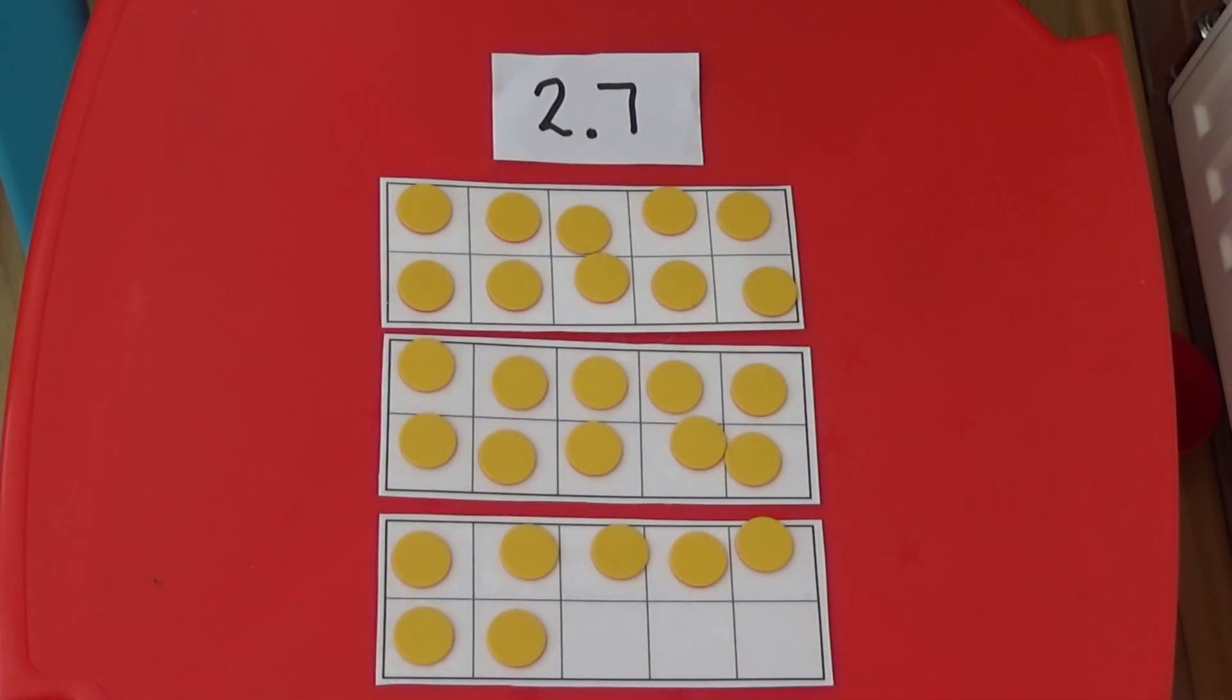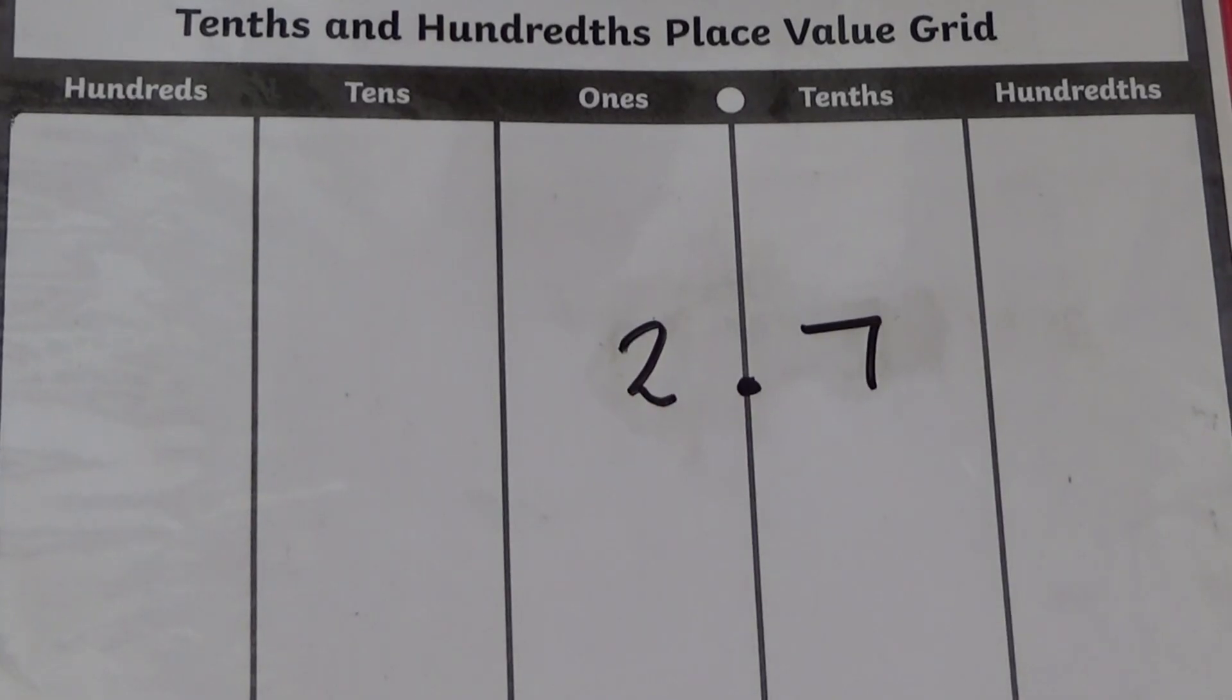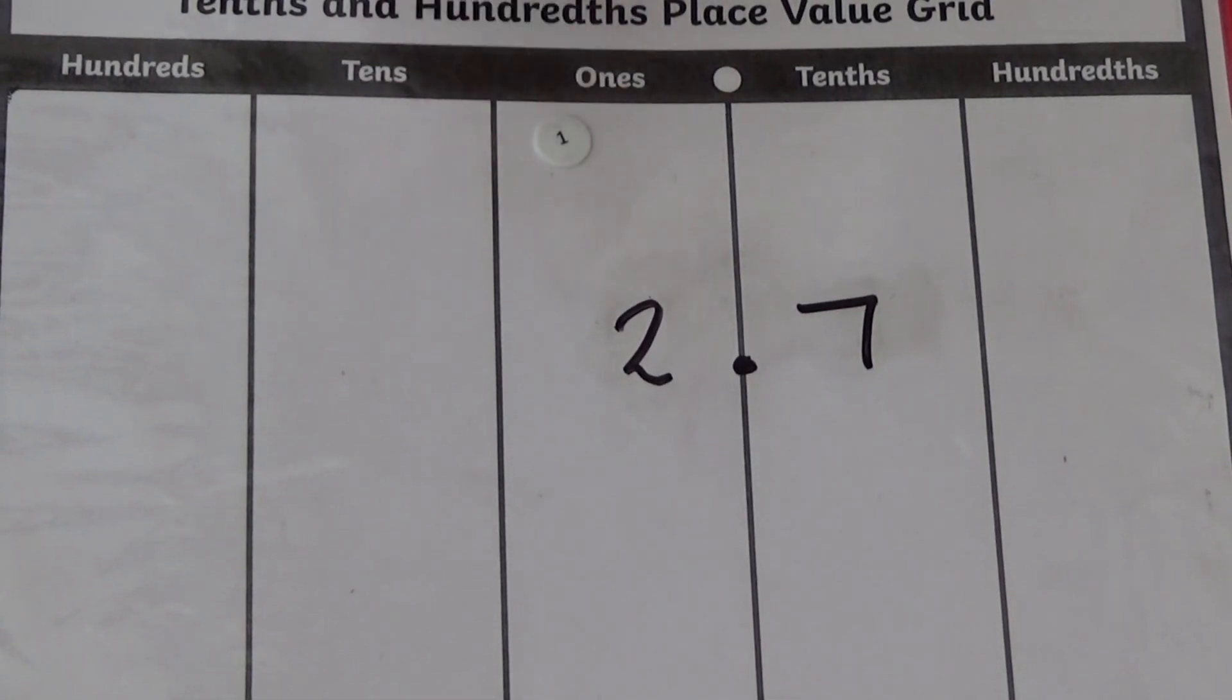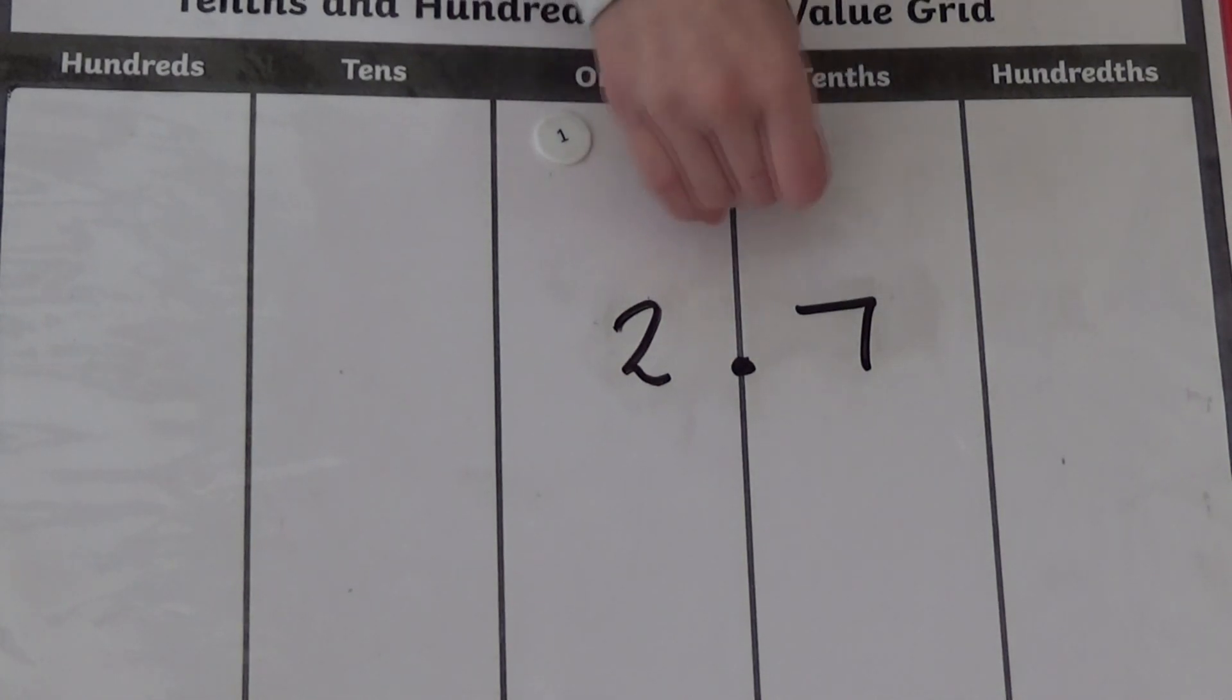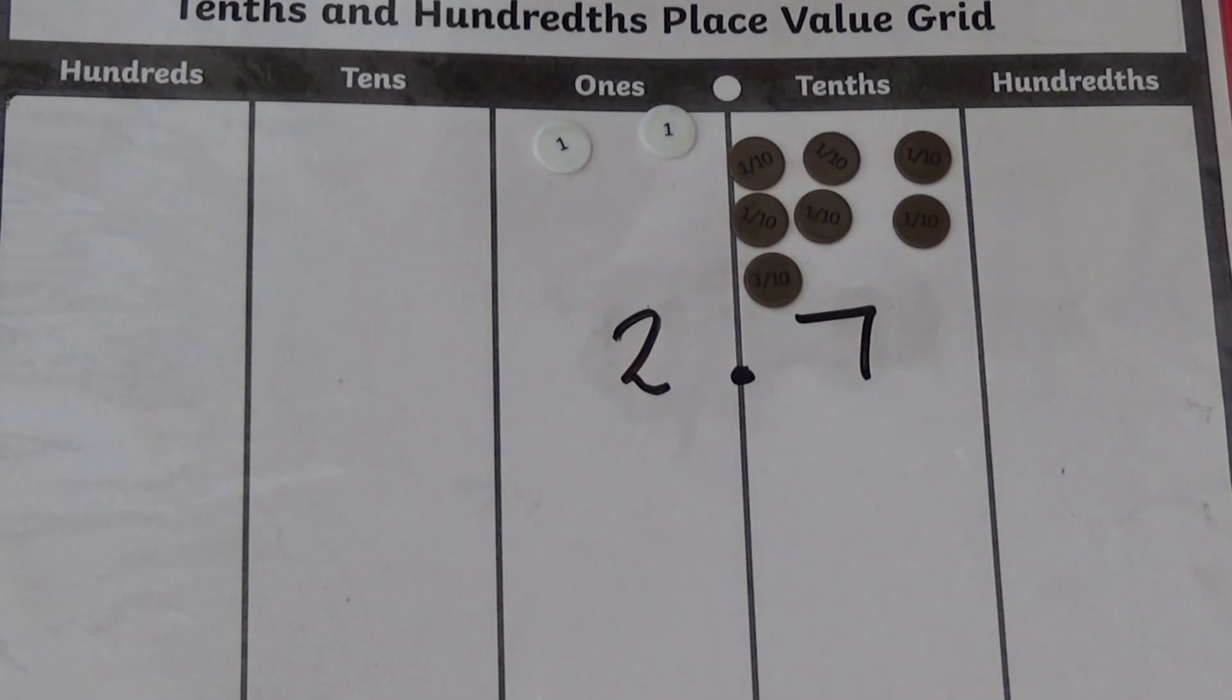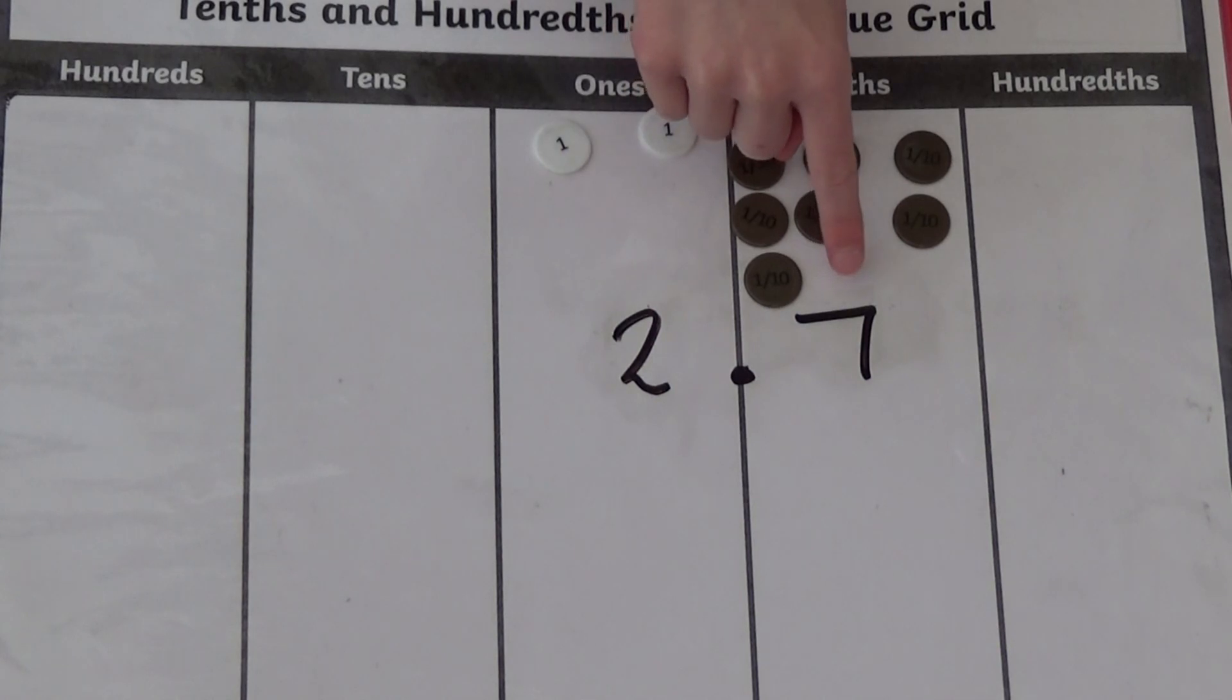So here we can see we have 2 whole and 7 tenths or 2.7. We can also show this on a place value grid. We have 2 whole so we need 2 counters in the ones column. We then need 7 tenths counters in the tenths column. So here we have 2 whole, a decimal point and 7 tenths.